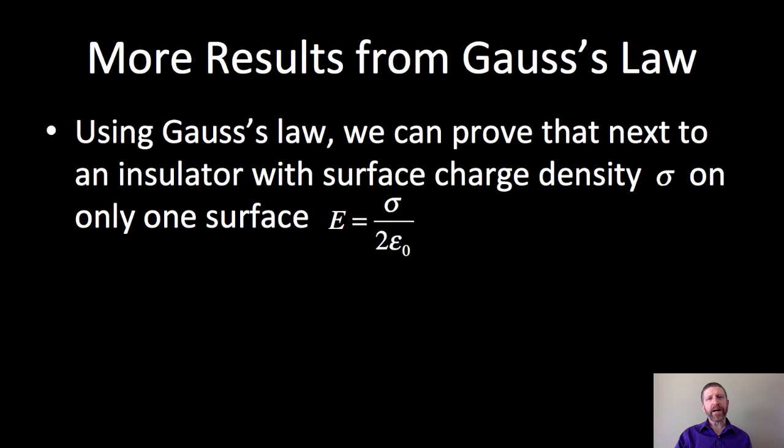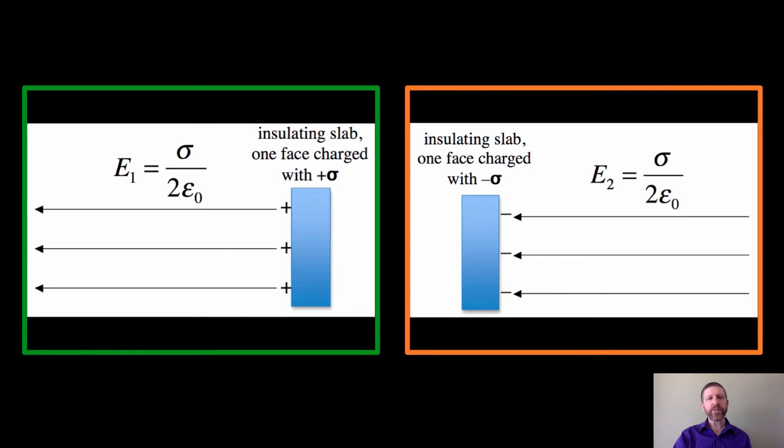We do get a few more results from Gauss's law. One important one being: with Gauss's law, we can prove that right next to an insulator with surface charge density sigma on only one surface, which differentiates it from a conductor, if it's got sigma on one surface, like one face of a plate or something like that, the field will be sigma over two epsilon naught.